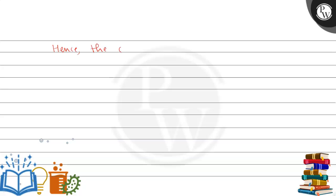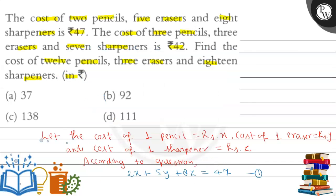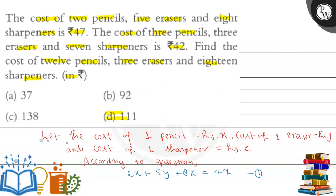Therefore, the cost of 12 pencils, 3 erasers and 18 sharpeners equals Rs. 111. This is our required answer. Option D is correct — Rs. 111. So I hope you understood the solution. Thank you, all the best.